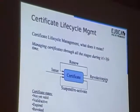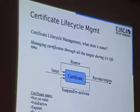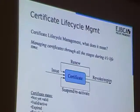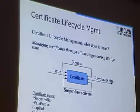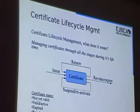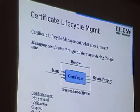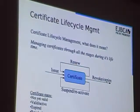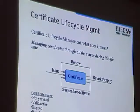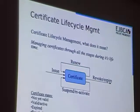For each smart card or certificate, you first issue it to someone, and then you can use it. When it expires, you have to renew it. If you lose it, you have to revoke it, so someone else can't steal it and use it. In the end, it expires and you throw it away and you just can't use it anymore. Those are the different states these certificates and smart cards go through over time.